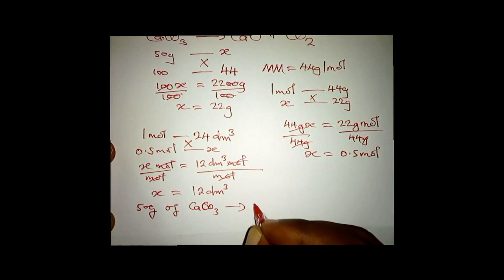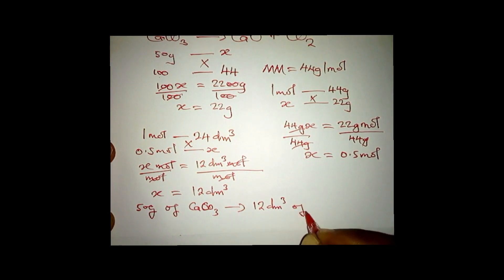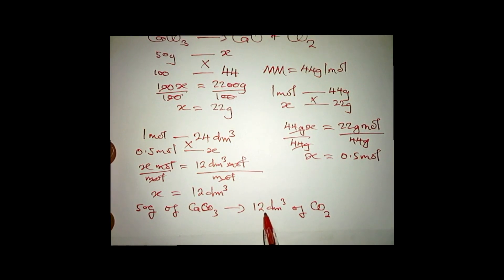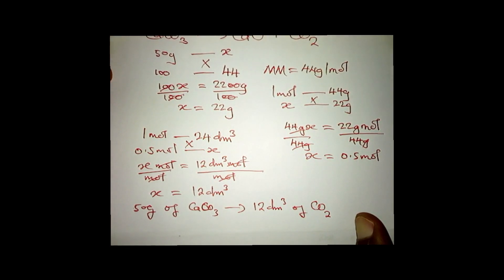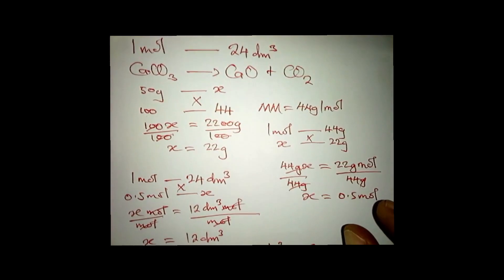So 50 grams of calcium carbonate will produce 12 cubic decimeters of carbon dioxide. Checking our answers, 12.0 cubic decimeters — the answer is A. I hope you have enjoyed seeing how to answer these two questions under the mole concept. If you enjoyed it, like it; if not, dislike it. See you in the next lesson!